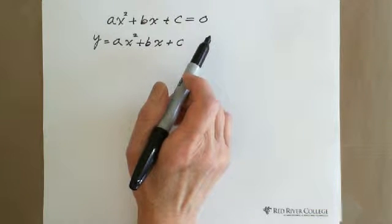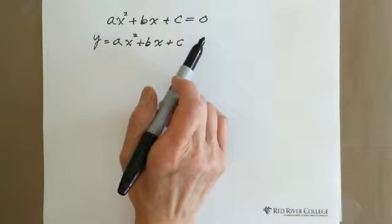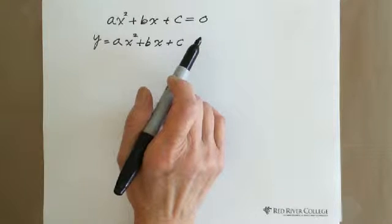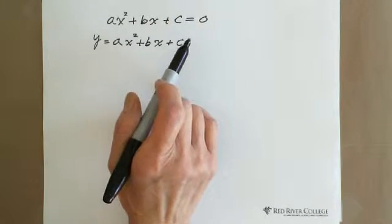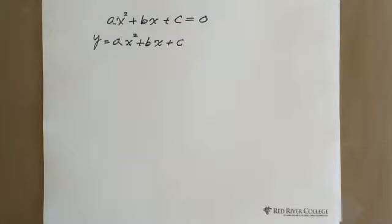Sometimes the parabola touches the x-axis at two points, giving two different values as answers. Sometimes the parabola touches the x-axis at only one point — the vertex touching the x-axis — and that situation has only one answer, which we call two identical solutions. And sometimes the parabola is not touching the x-axis at all, so we cannot find any x that makes the function equal zero. We call this no solution.